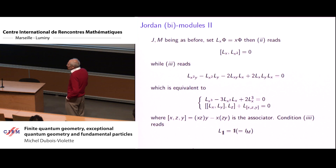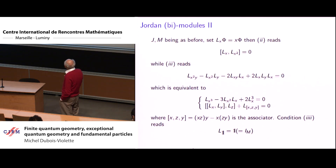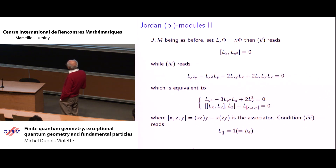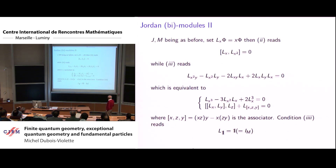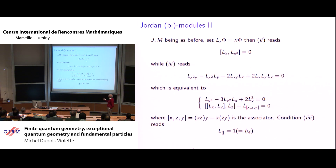The second relation, which looks complicated, can be split in two. One part comes from setting y equal to x, and the remainder is that the double commutator [L_x, [L_y, L_z]] equals L applied to the commutator [L_x, L_y] evaluated at z, which equals minus the associator of x, z, y. This says that the commutator [L_x, L_y] is a derivation of your Jordan algebra.